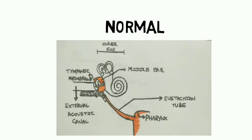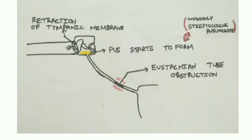The Eustachian tube is a patent tube which connects the middle ear and the pharynx; it ventilates the middle ear. Here you can see the obstruction of the Eustachian tube, which leads to the development of negative pressure within the middle ear, and the tympanic membrane starts to retract. Organisms such as Streptococcus pneumoniae start to build up within the middle ear.